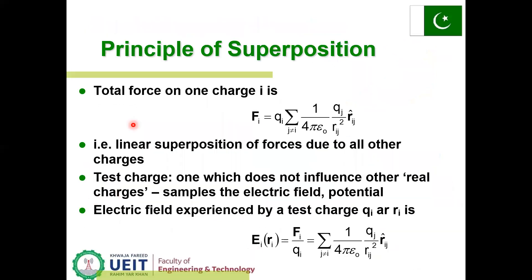Principle of superposition: the total force on charge i is F_i equals q_i times the summation over j from 1 to n (j not equal to i) of 1 over 4 pi epsilon times q_j over r_ij squared times r_ij hat. R_ij is the distance between charges q_i and q_j. This represents the linear superposition of forces due to all other charges.